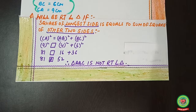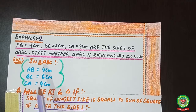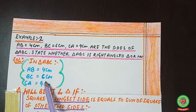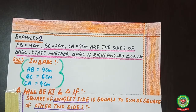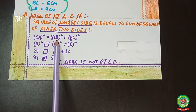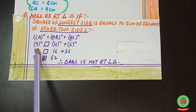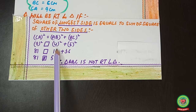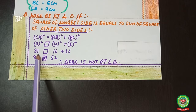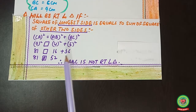Now we see which is the longest side — it is 9, which is CA. So we write: CA² = AB² + BC². Putting in the values: 9² ? 4² + 6².